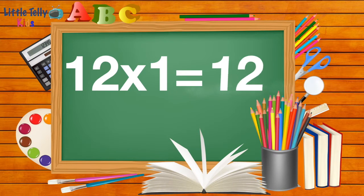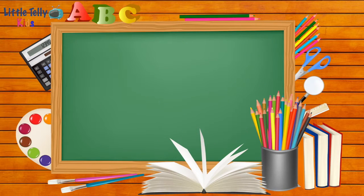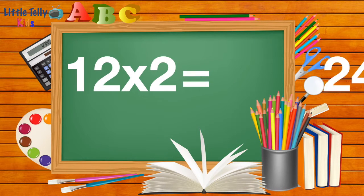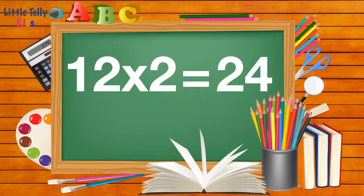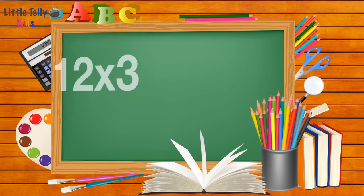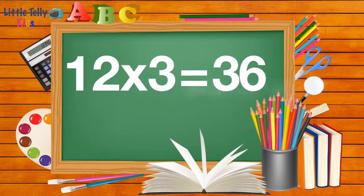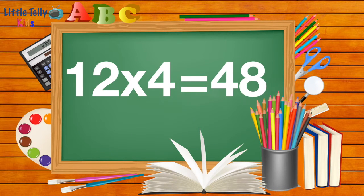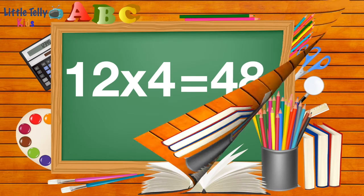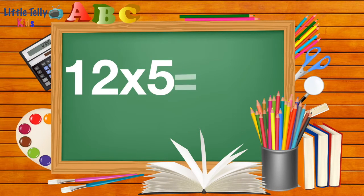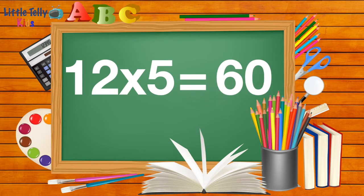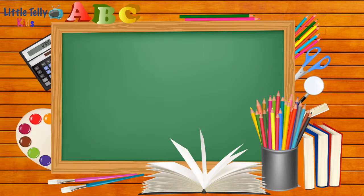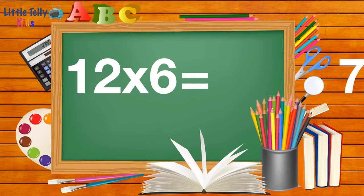12 ones are 12. 12 twos are 24. 12 threes are 36. 12 fours are 48. 12 fives are 60. 12 sixes are 72.